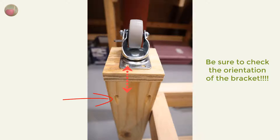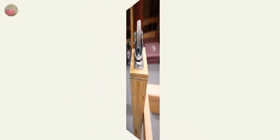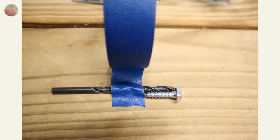At this point, I just drew the outline of the caster mounting bracket and holes, and then I drilled those pilot holes. Now, the lag screws that fit these casters is 1⁄4 inch by 1 inch.